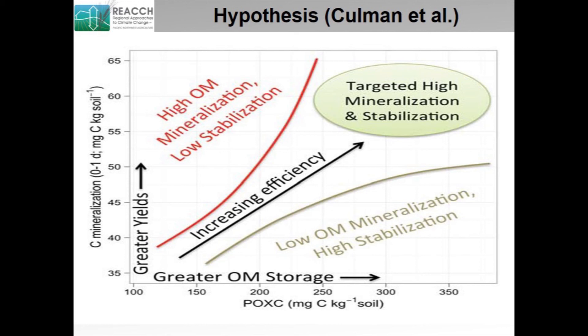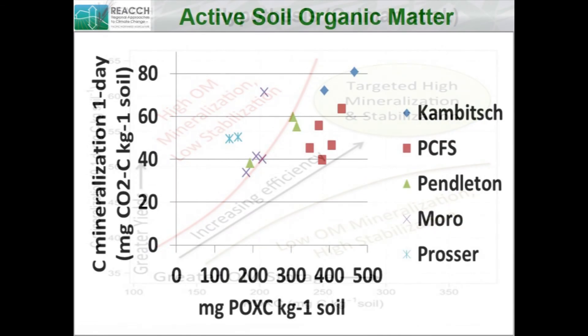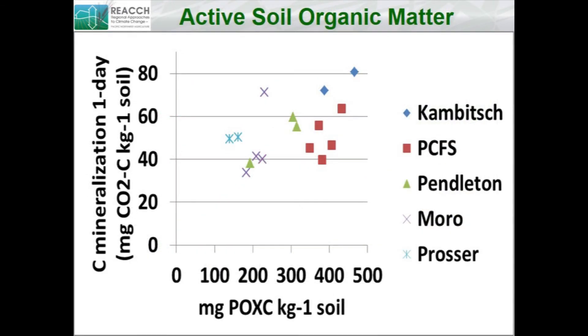On one axis: greater organic matter storage, low organic matter mineralization, high stabilization. On the other: greater yields leading to high organic matter mineralization and lower stabilization. How do our cropping systems play out on these two axes with respect to these active pools? Jason has been going out to different sites — Cambridge, the PCFS near Pullman, Pendleton, longer-term sites at Morrow, and the irrigated site at Prosser — to see how they play out in terms of CO2 mineralization and POXC.